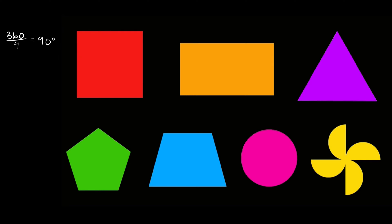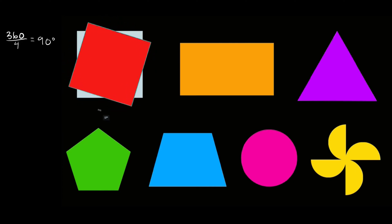So again, that means if we rotate this thing 90 degrees — or every 90 degrees that we rotate it — it's going to map onto itself. So if we rotate it 90, it maps onto itself. There's 90. Another 90 right there, and another 90 right there. And then lastly, this 90 degrees back to zero. So that's an easy way you can figure out the angle of rotation for a regular polygon.